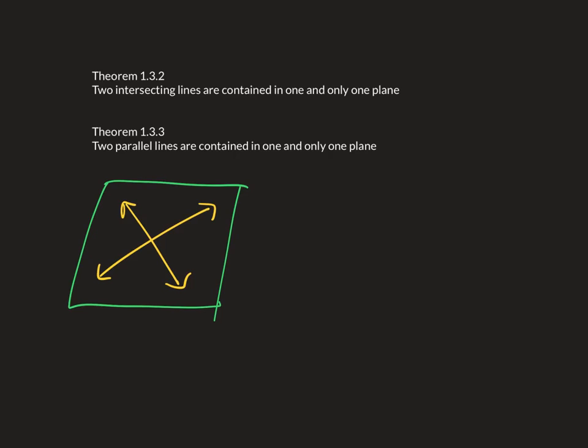Same thing with the second one. Two parallel lines have to be in the same plane. You can't have two lines and call them parallel, but they be in different planes. So, there's exactly one plane that can contain those lines, is what these two theorems basically mean.